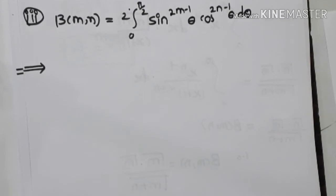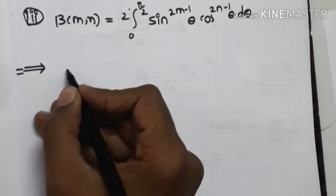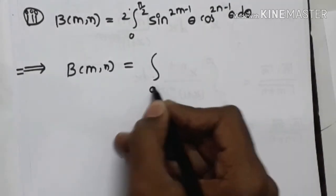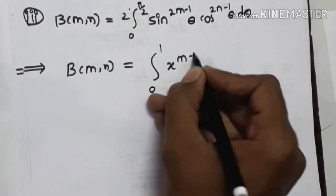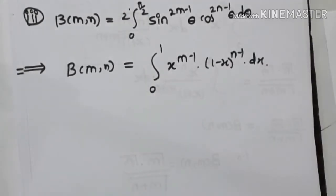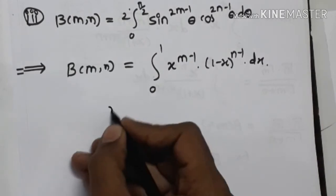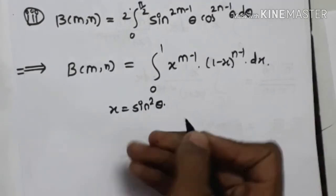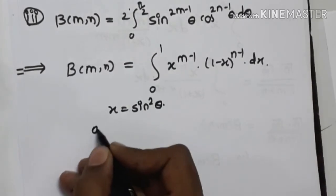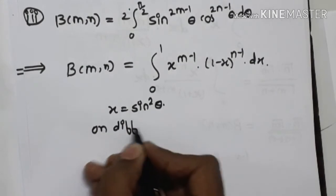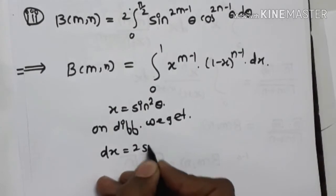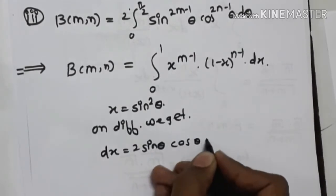Now for the third property: we know the formula for beta function is beta(m,n) equal to the integral from 0 to 1 of x raised to m minus 1 into 1 minus x raised to n minus 1 dx. We simply have to put x equal to sin squared theta here.